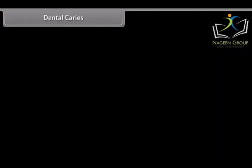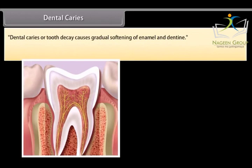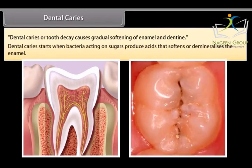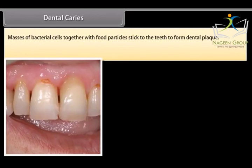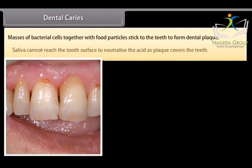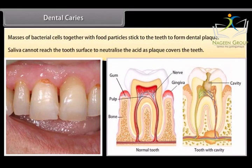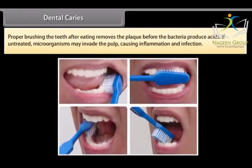Dental caries, or tooth decay, causes gradual softening of enamel and dentine. It starts when bacteria acting on sugars produce acids that soften and demineralize the enamel. Masses of bacterial cells together with food particles stick to teeth to form dental plaque. Saliva cannot reach the tooth surface to neutralize the acid as plaque covers the teeth. Proper brushing after eating removes plaque before bacteria produce acids. If untreated, microorganisms may invade the pulp, causing inflammation and infection.